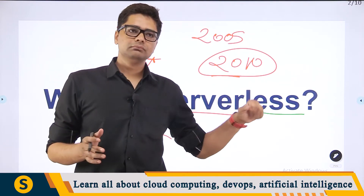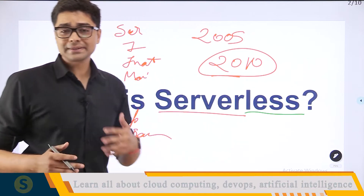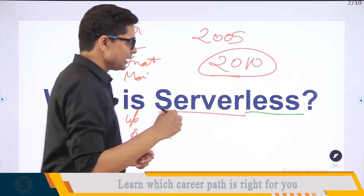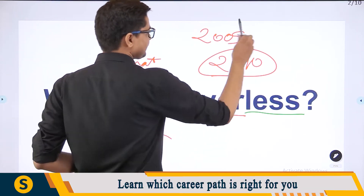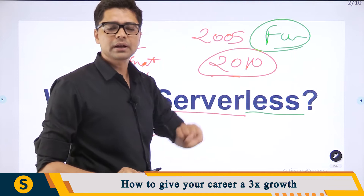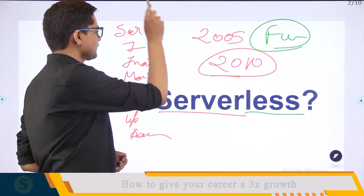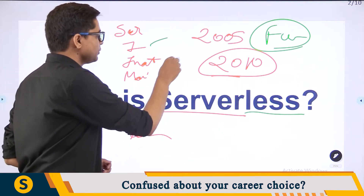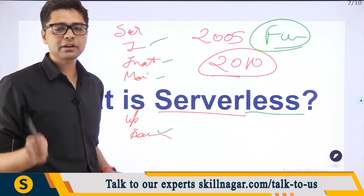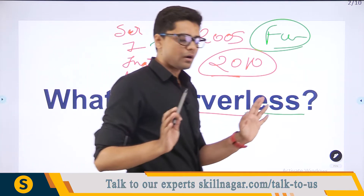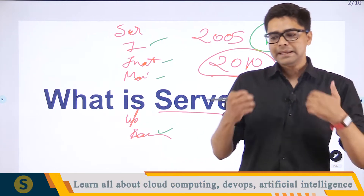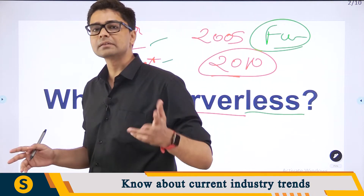AWS came with something known as Function as a Service. What happened is: when you are going to write a function, that's it — you upload that function to the cloud and you don't have to worry about installation of the platform, how to update it, how to patch it, or the security, because the cloud is taking care of that. These days, there is not a single company I know of which is not using serverless.